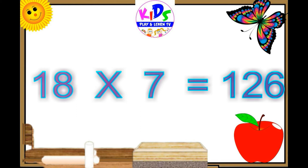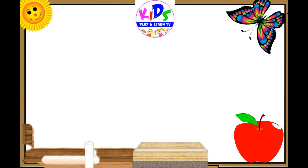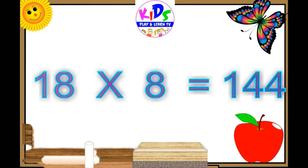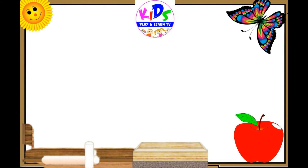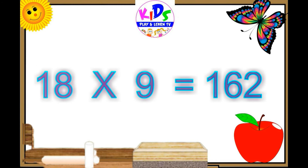Eighteen sevens are 126. Eighteen eights are 144.